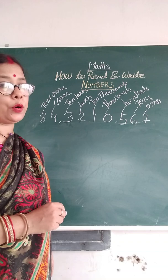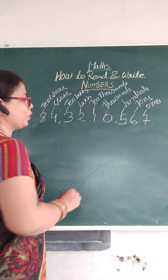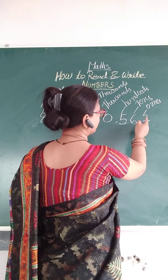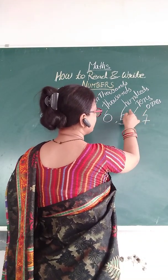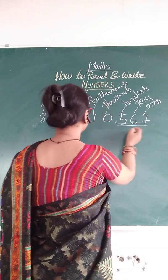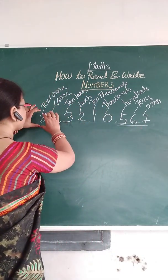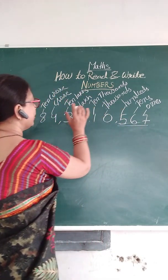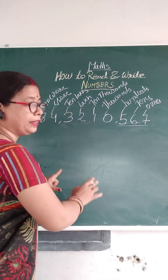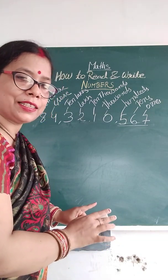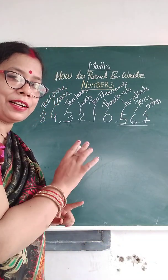So, periods: five hundred sixty seven — ones, hundreds, thousand, ten thousand. In the Indian system, and in the international system, from the right side every three digits get a comma.